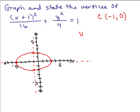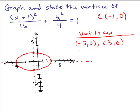So what are the vertices? Well, I've got (-5, 0) and I have (3, 0). Those are the ones on the horizontal axis. And then we have (-1, 2) and we have (-1, -2). And that's all there is to it.